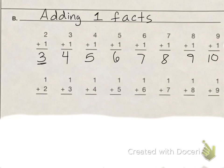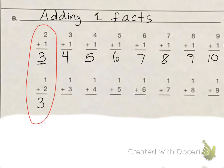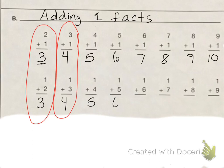So does the commutative property still work for adding ones? Yes, it does. Because if we look here, we have one plus two, and that equals three. We have three plus one is four, and one plus three is four. So remember, I can add numbers in any order and get the same answer. One plus four is five, one plus five is six, one plus six is seven, one plus seven is eight, one plus eight is nine, and one plus nine is ten.